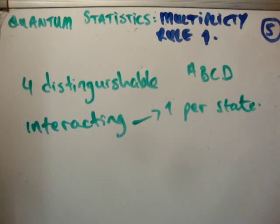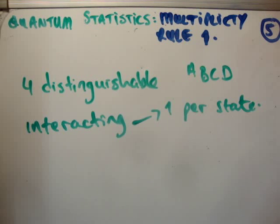So we have four distinguishable particles, and they are interacting. Now this doesn't fit into one of the classical boson or fermion. I'm just making this up in order to fit into the rule.